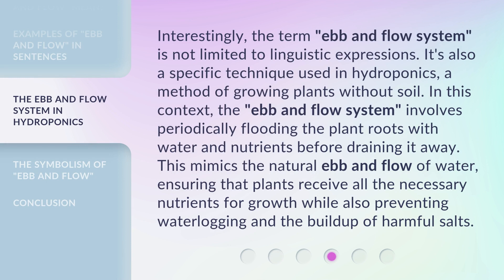Interestingly, the term 'ebb and flow system' is not limited to linguistic expressions. It's also a specific technique used in hydroponics, a method of growing plants without soil. In this context, the ebb and flow system involves periodically flooding the plant roots with water and nutrients before draining it away. This mimics the natural ebb and flow of water, ensuring that plants receive all the necessary nutrients for growth while also preventing waterlogging and the buildup of harmful salts.